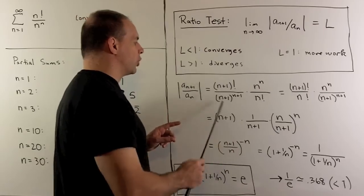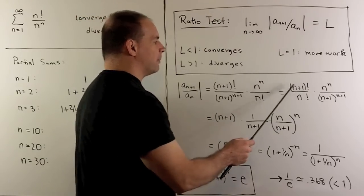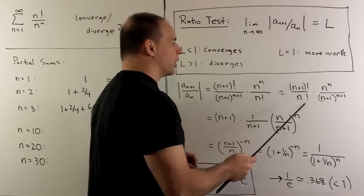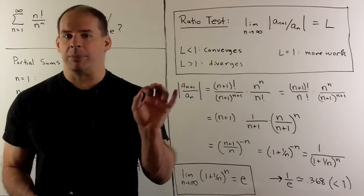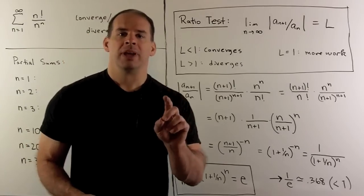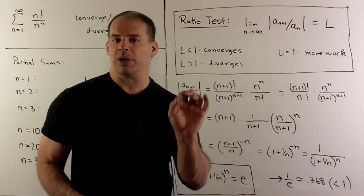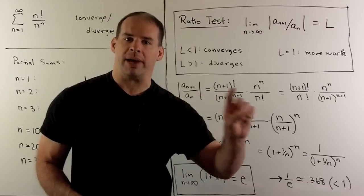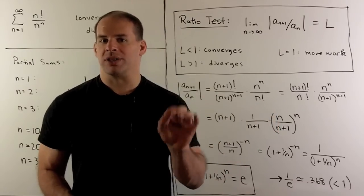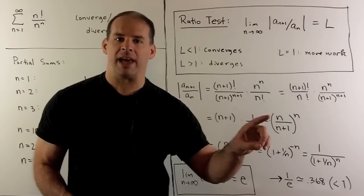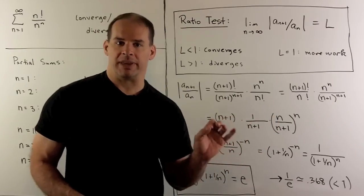Now, I'm going to rearrange terms a little bit. If I have n plus 1 factorial over n factorial, that's equal to n plus 1. So if you just use the definition, n plus 1 factorial is n plus 1, n, n minus 1, all the way down. n factorial is n, n minus 1, all the way down. So everything cancels but the n plus 1.